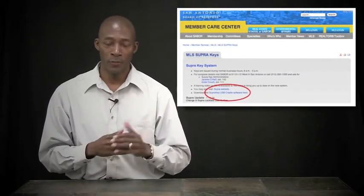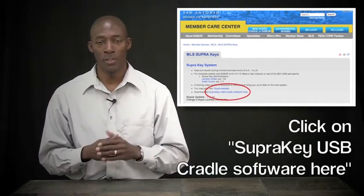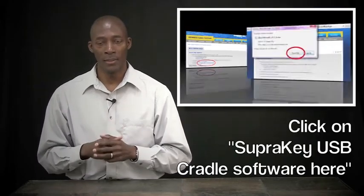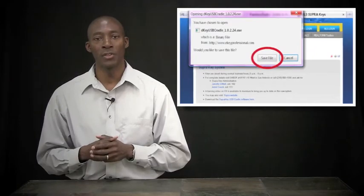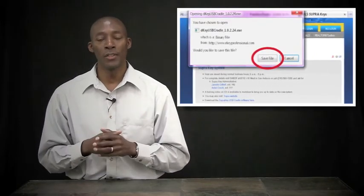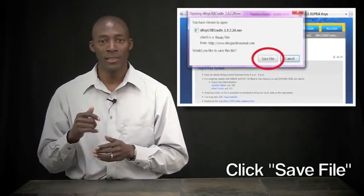You're going to go down to the fifth bullet, and it'll say USB Cradle Download. Click here. You're going to click on that link. Once you click on that link, it's going to ask, do you want to run it, or do you want to save it? You actually want to click Save.